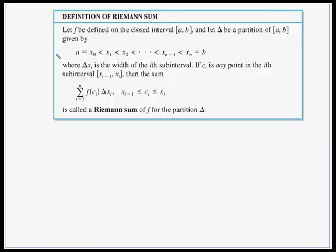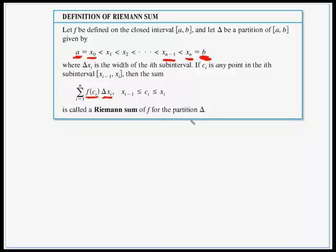In the following definition of a Riemann sum, notice that the function f has no restrictions other than being defined on some interval from a to b. In the preceding section, f was always assumed to be continuous and non-negative because we were dealing with area under a curve. Here is our definition: let f be defined on a closed interval from a to b, and let delta be a partition given by a equals x sub 0 less than x sub 1 less than x sub 2, dot dot dot, up to x sub n equals b, where delta x sub i is the width of the i-th sub-interval. If c sub i is any point in the i-th sub-interval, then the summation from i equals 1 to n of f of c sub i times delta x sub i is called a Riemann sum of f for the partition delta.